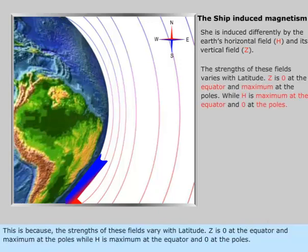This is because the strengths of these fields vary with latitude. Z is zero at the equator and maximum at the poles, while H is maximum at the equator and zero at the poles.